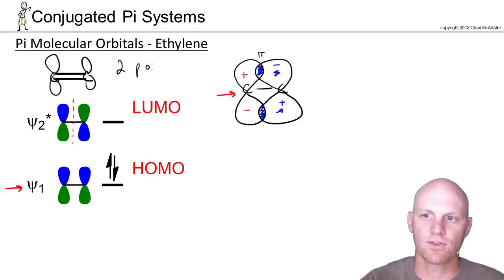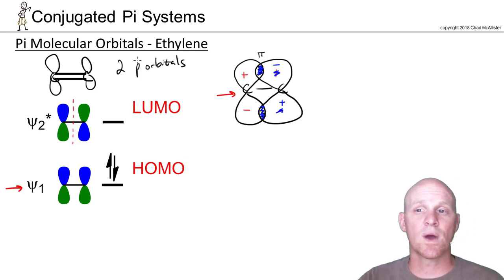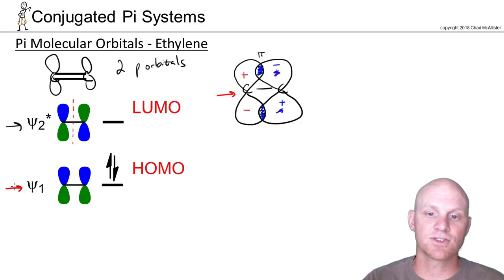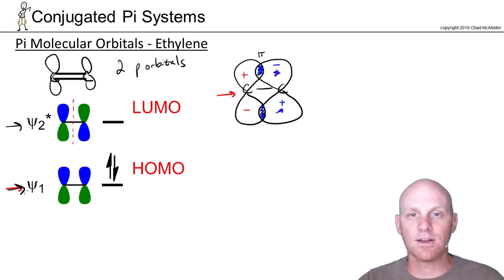And so first off, we're starting with two p orbitals. And when you combine two p orbitals, it turns out there's two ways to do it. And so combining two p orbitals always leads to the creation of two pi molecular orbitals. So in this case, psi 1 and psi 2. Your lower half are always bonding. Your upper half are anti-bonding. And we signify that with this asterisk right here. That always means anti-bonding.